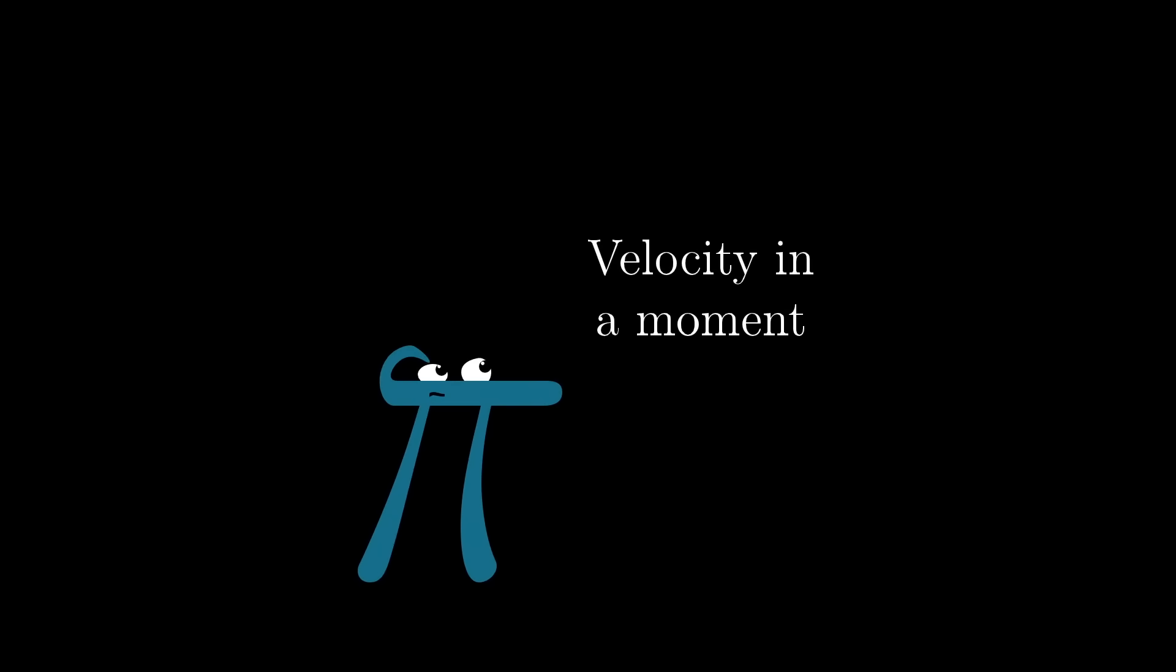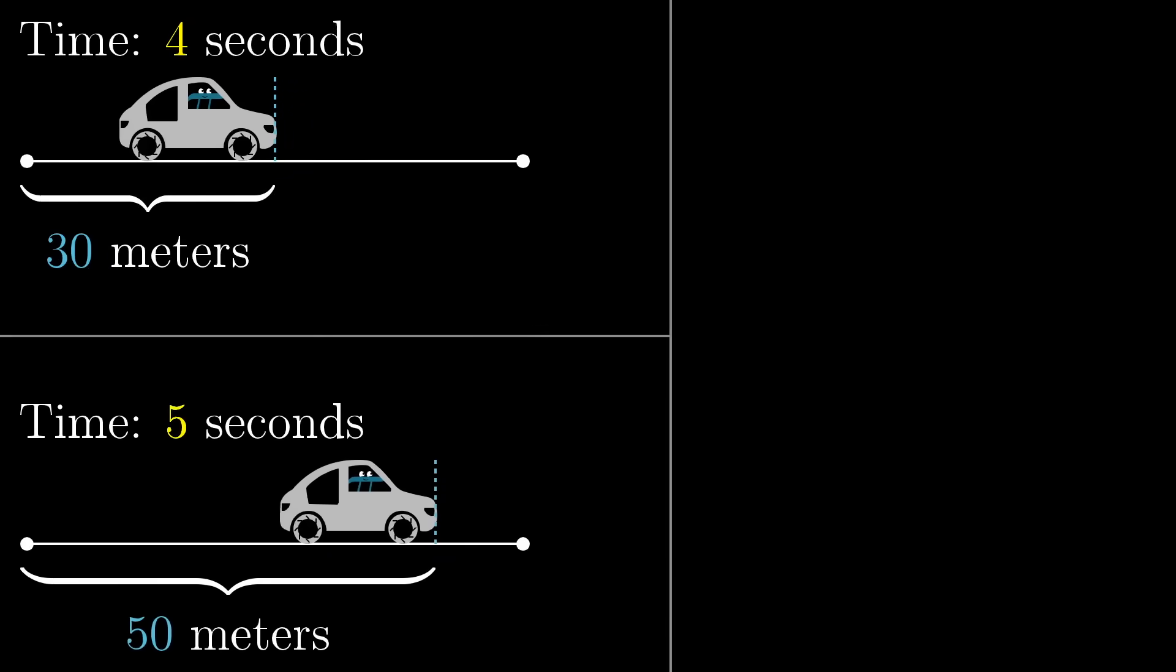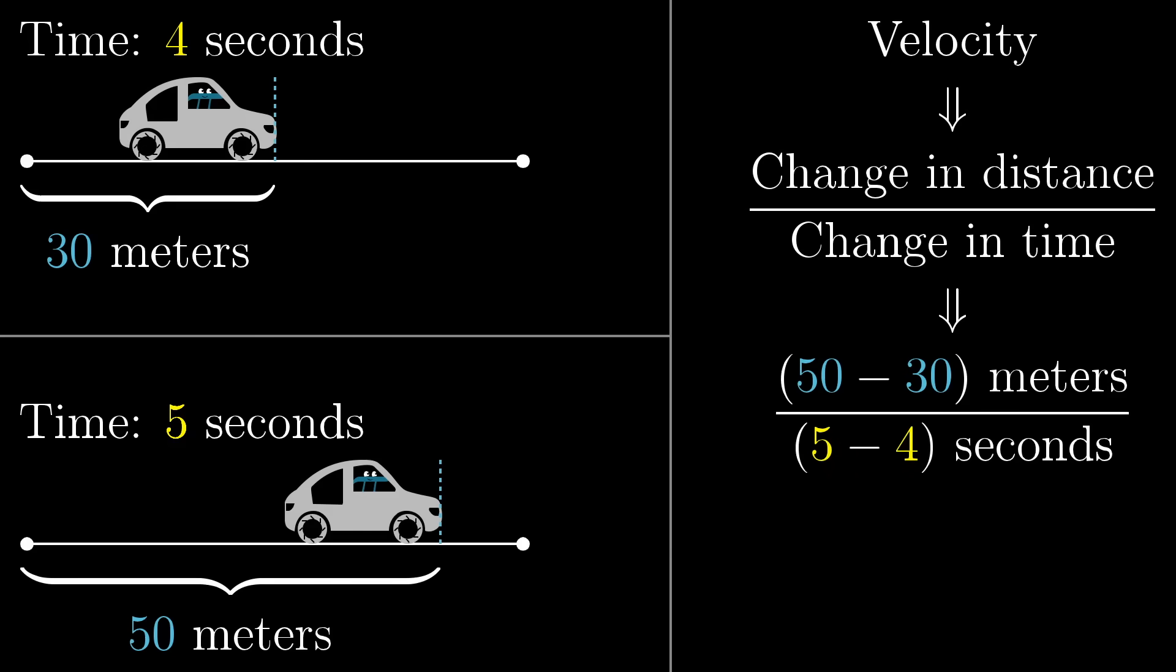But the funny thing is, velocity at a single moment makes no sense. If I show you a picture of a car, just a snapshot in an instant, and I ask you how fast it's going, you'd have no way of telling me. What you'd need are two separate points in time to compare. That way you can compute whatever the change in distance across those times is, divided by the change in time.